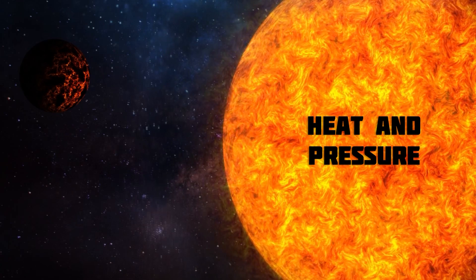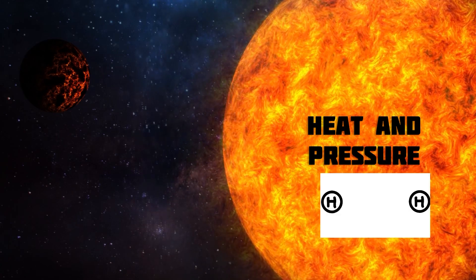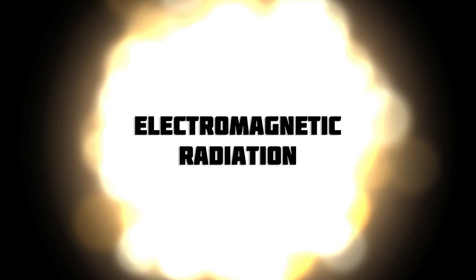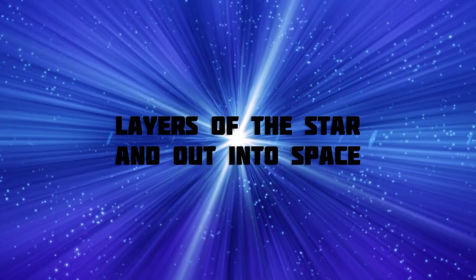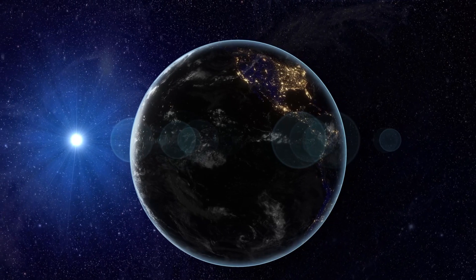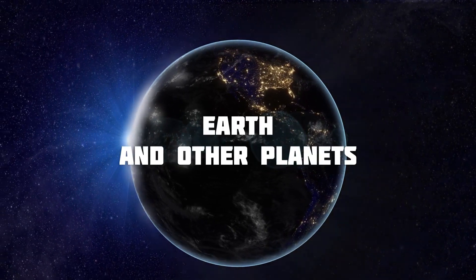The heat and pressure in the core are so intense that they cause the hydrogen atoms to fuse together, releasing energy in the form of light and other forms of electromagnetic radiation. This light then travels through the layers of the star and out into space, where it can be seen from Earth and other planets.